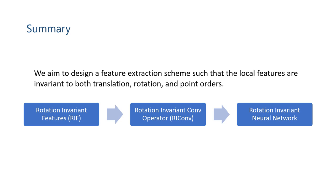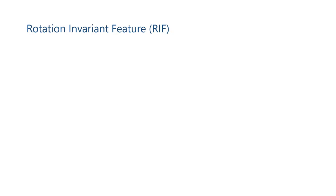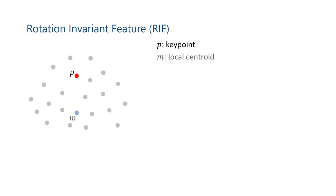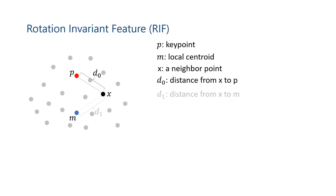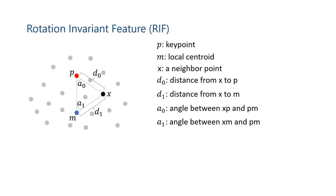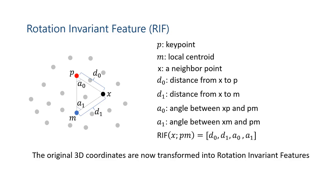Our method can be summarized in the following three steps. In the first step, rotation environment features are constructed. For local point P, we compute the centroid M. Then, for any neighboring point X, we compute the rotation environment attributes: D0, D1, A0, A1. Finally, we denote the local rotation environment features as RF, which is the combination of these attributes. In this way, the original 3D coordinates are transformed into rotation environment features.